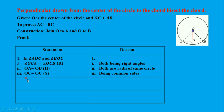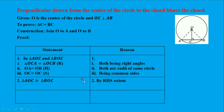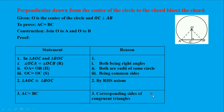And lastly, OC equals OC — that is the common side. OC is a side of triangle AOC and the same OC is also a side of triangle OBC, so it is a common side. Therefore, triangle AOC is congruent to triangle BOC by RHS. Since these two triangles are congruent, AC equals BC. The reason is that they are corresponding sides of congruent triangles.